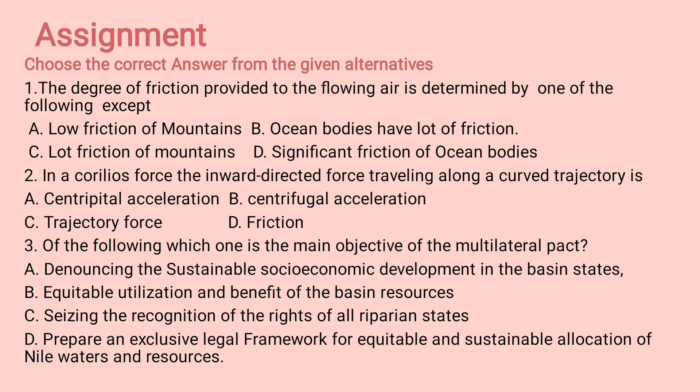Question number three: Of the following, which one is the main objective of the multilateral pact? a) Denouncing the sustainable socio-economic development in the basin states, b) equitable utilization and benefit of the basin resources, c) saving the recognition of the rights of all riparian states, d) prepare an exclusive legal framework for equitable and sustainable allocation of Nile waters and resources.